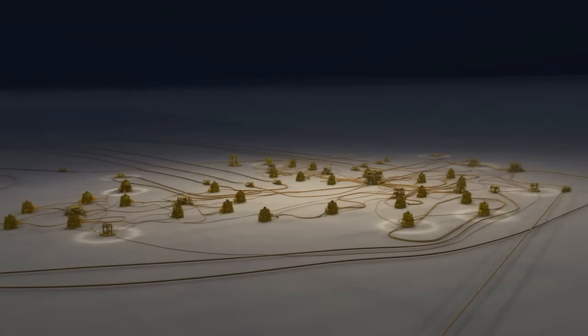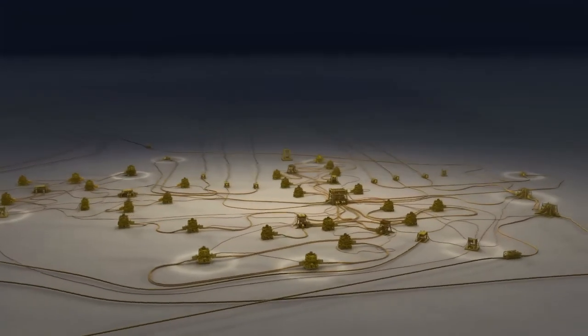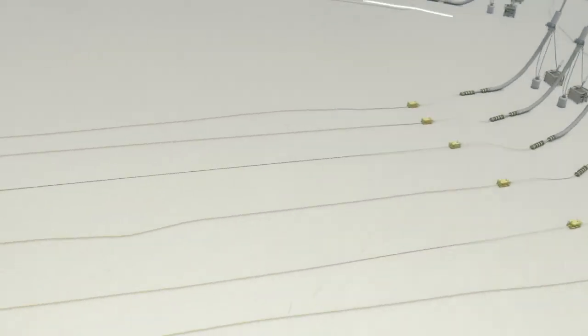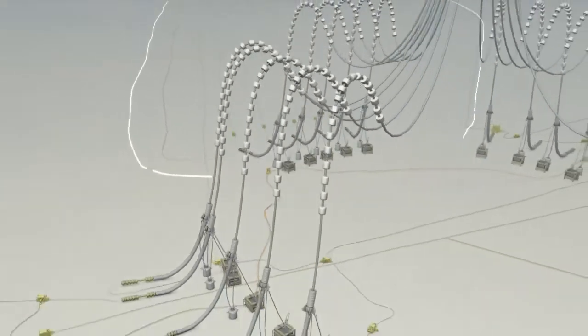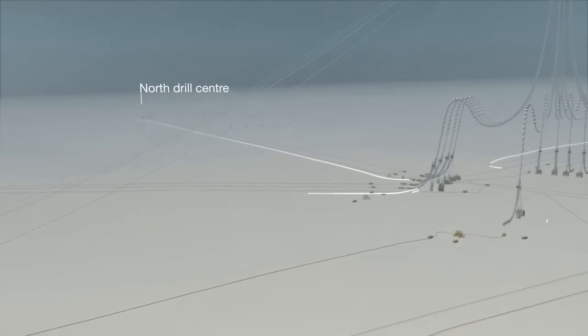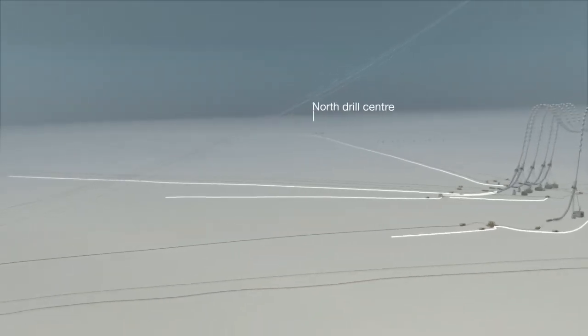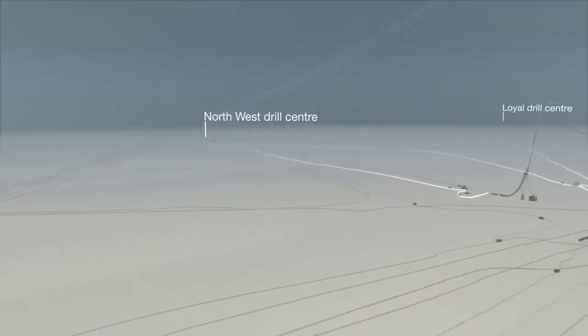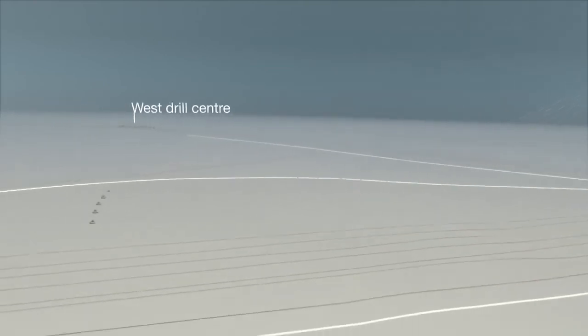New flowlines and umbilicals will be installed to connect the drill centers, in this case from the central drill center. They will carry the oil and gas three kilometers back to the FPSO, where they will join pre-installed flowline termination assemblies and the risers to the surface facilities. All five drill centers are connected in this way to deliver the extracted reserves from the field to the FPSO, each drill center delivering an increased production from its new facilities.